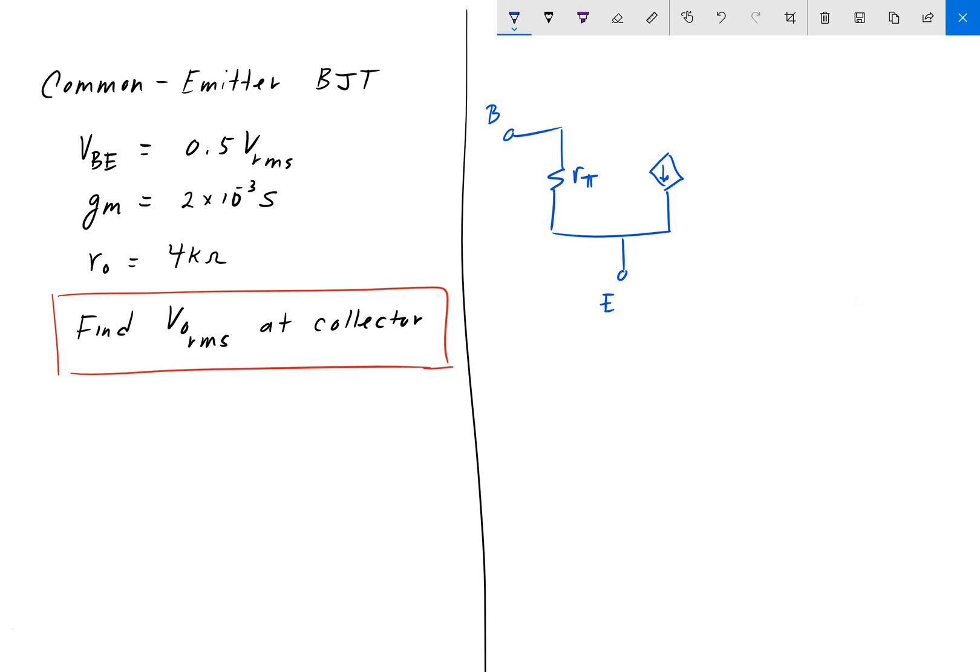and that was equal to, what was it, GmVBE, where this here is VBE, and then you had an output resistor RO at the collector. And so we're looking for Vout right here.